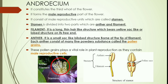The third whorl of a flower is androecium, and it is the male reproductive part of the flower. It consists of male reproductive units called stamen. Stamen is divided into two parts: anther and filament.